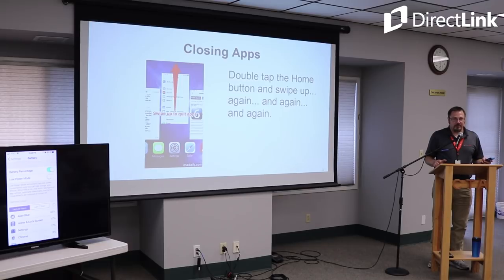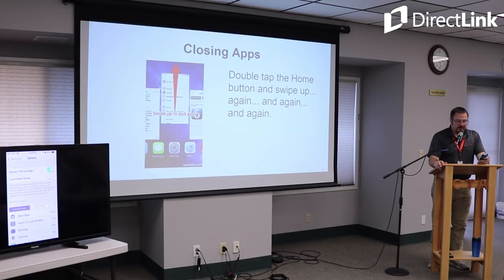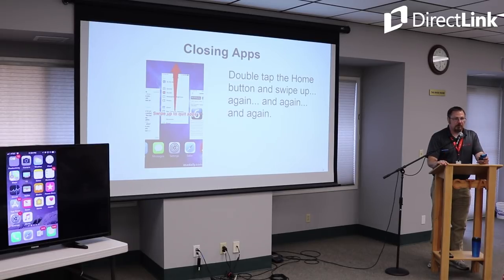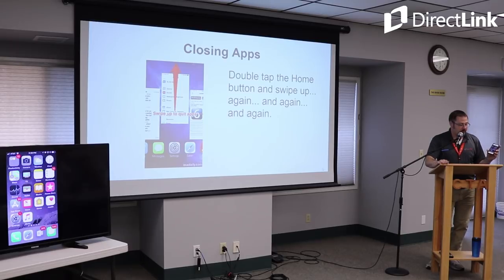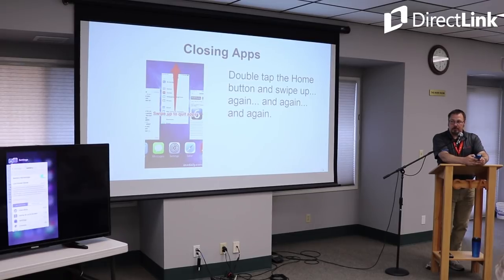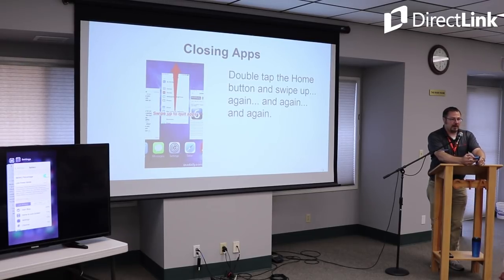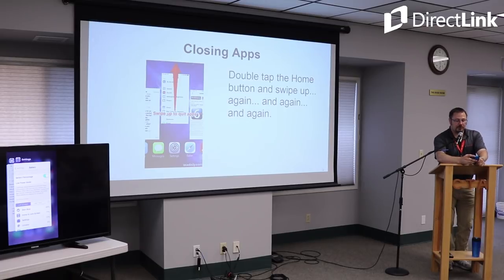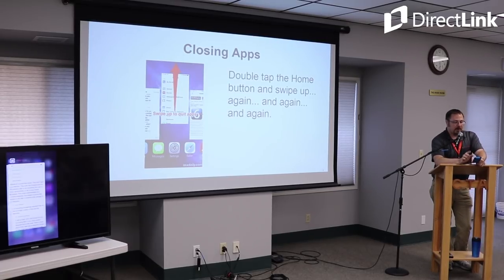It's a very easy trap to fall into. Right now I've got the Settings app open on my phone. If I just hit the home button, it looks like everything's good — but that Settings app is still open. To close apps, tap the home button twice and you'll get into a screen showing all the different apps you have open. You can scroll back and forth through them. To close an app once you're in this screen, take the app and swipe up, and that will close it.